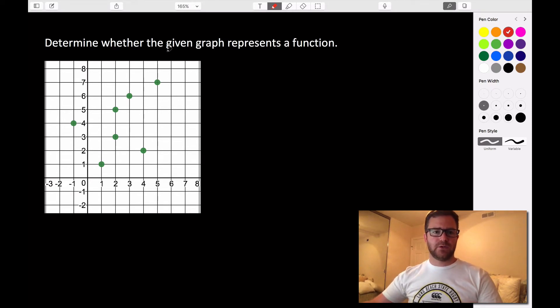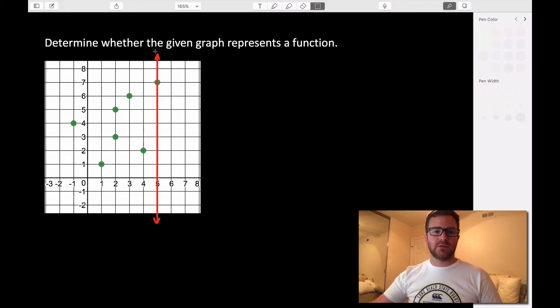Because if we draw a vertical line through our graph, and it intersects more than a single point at any time during our graph, even if it just happens once, we must say that that graph is not a function.